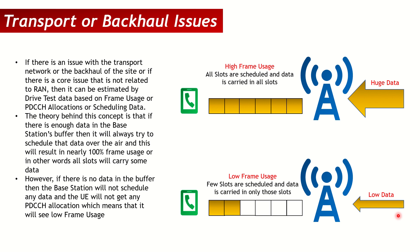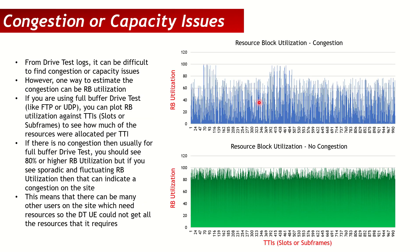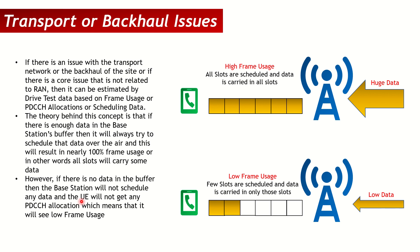People often confuse these two scenarios. Resource block utilization is measured on the PDSCH — the Physical Downlink Shared Channel (the data channel). PDCCH allocation is on the Physical Downlink Control Channel. If your PDSCH shows low utilization, that usually indicates congestion or capacity issues at the site. If your PDCCH shows low scheduling count or low frame usage, that usually points to a backhaul, transport, or core issue.